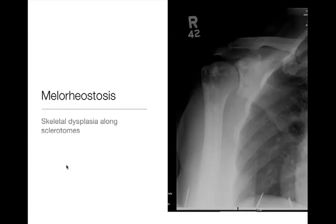Melorheostosis is a skeletal dysplasia that runs along sclerotomes, with sclerotic bands and cortical thickening extending along the bone — classically described as a dripping candle wax appearance. It can be seen isolated to one bone or in multiple bones. There is no malignant potential to melorheostosis, but it can be painful and can cause problems if it crosses joint spaces or impinges on a neurovascular bundle.